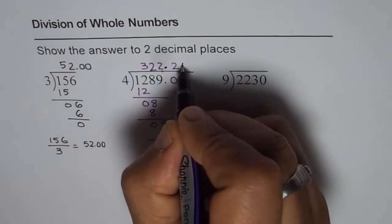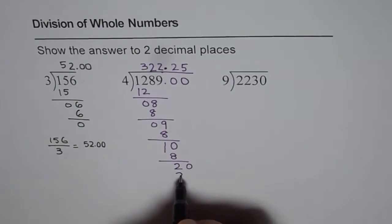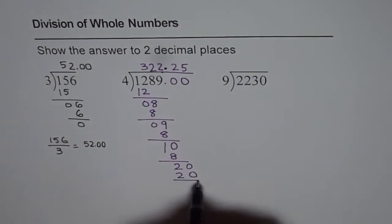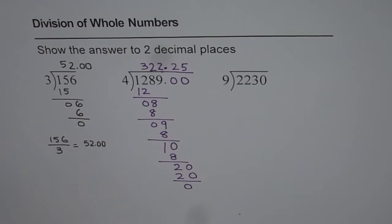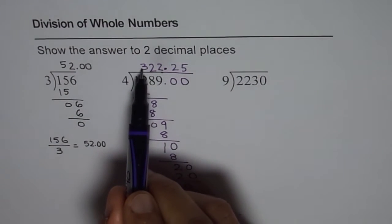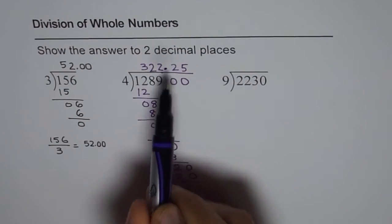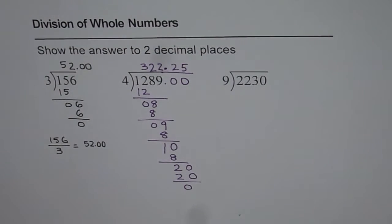And it is indeed 4 times 5 equals to 20. Remainder is 0. So in this case we get 322.25 as our answer, and that is to two decimal places.